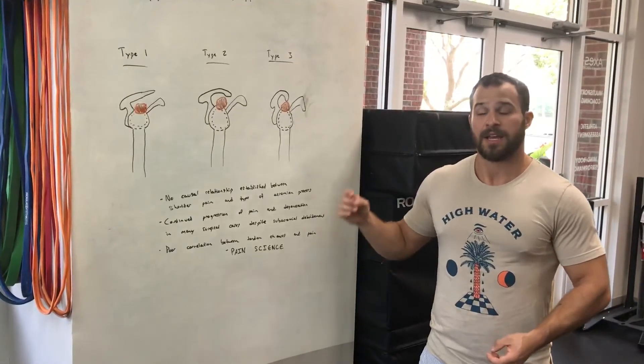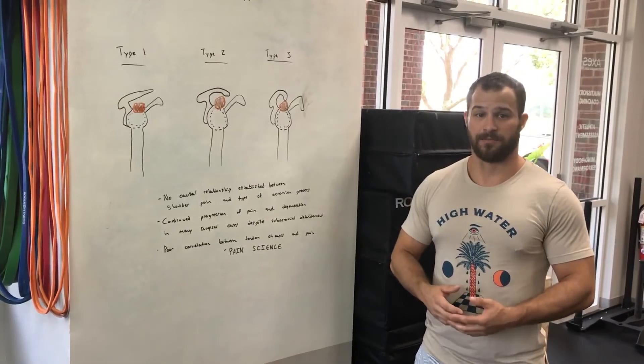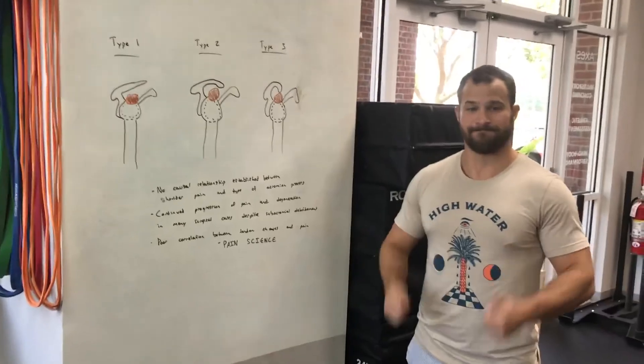Thinking of this through the pain science lens: your brain has to decide there's a threat in the area for you to feel pain. If changes happen slowly enough and you're not doing anything with your shoulder where your brain decides the tendinopathy is a threat, it's not going to make you feel pain. To boil it all down — impingement is not a great model for why we end up having shoulder pain, it's probably not a useful diagnosis, and it doesn't really tell you what tissues are having issues or why you're in pain at all. Generally it's rotator cuff tendinopathy, and the best way to fix that is to load it and lift things, probably with a good physical therapist or personal trainer.